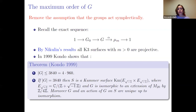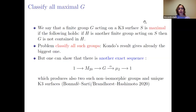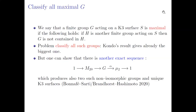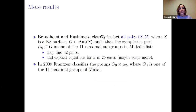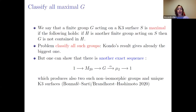How do we now classify these groups? The idea is: you know Kondo's group is the biggest one, but one can ask whether there are other maximal groups, again with respect to inclusion as Mukai did. This is what we want to talk about now.